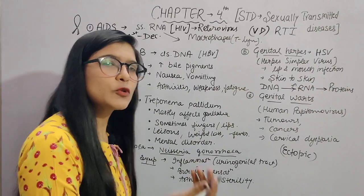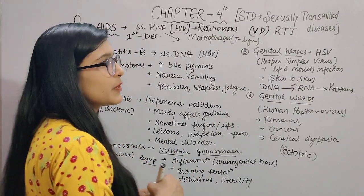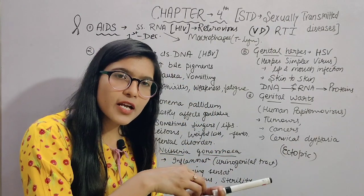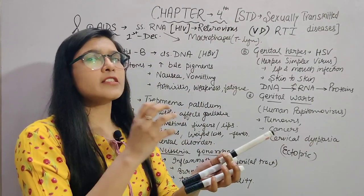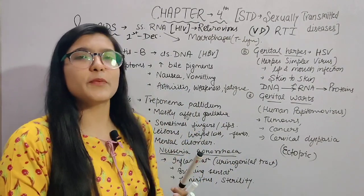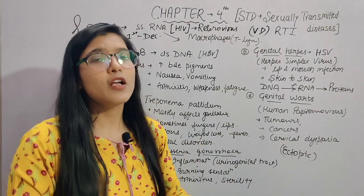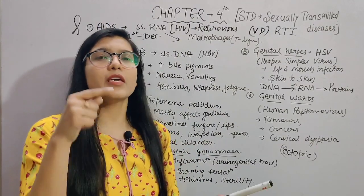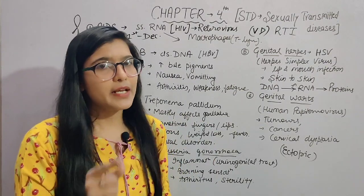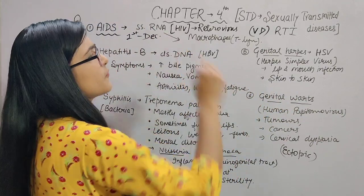Transcription in reverse is called reverse transcription. When this virus's RNA enters an animal cell, reverse transcription occurs — the RNA converts into DNA. Then the viral DNA merges with the host cell's DNA, begins replication, and creates multiple copies of new viruses. This replication process happens inside macrophages, so macrophages are called the HIV factory.